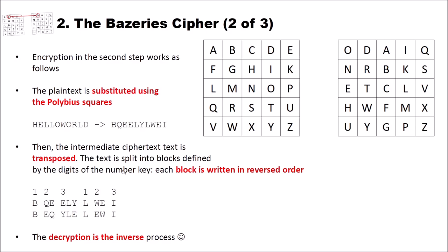We have 1, 2, 3, 1, 2, 3. So we have the first block A B, the second block is Q, E, the third block is E, L, Y, and so on. And then,